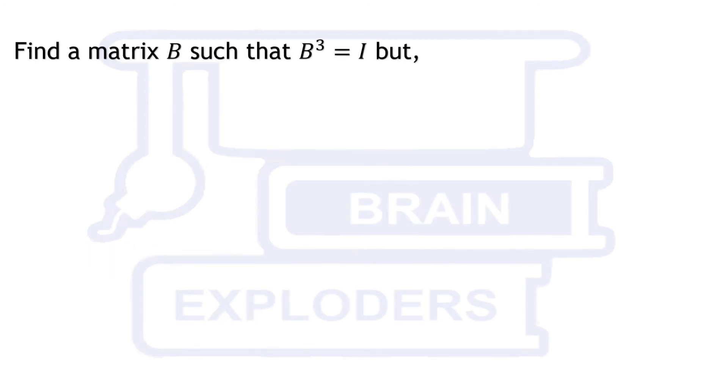Find a matrix B such that B³ is identity matrix, but B is neither identity matrix nor rotation matrix.